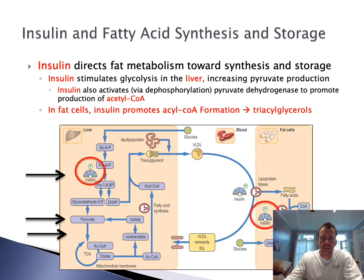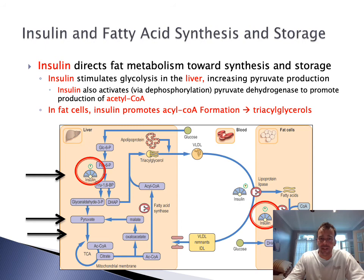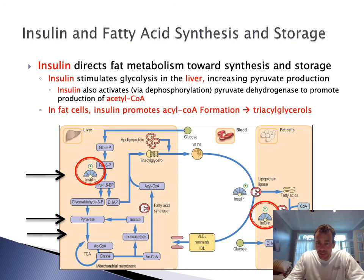Insulin plays a role in fatty acid synthesis and storage. Insulin directs fat metabolism towards synthesis and storage by stimulating glycolysis in the liver, increasing pyruvate production, and activating pyruvate dehydrogenase to produce more acetyl-CoA. In fat cells, insulin promotes acyl-CoA formation to lead to triacylglycerol production.